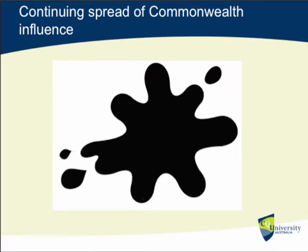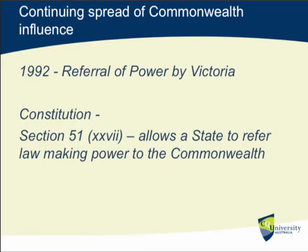Perhaps the best way to think about what happened from that point forward is to think of an ink blot that's continuing to spread. Effectively what we're looking at is a continuing spread of Commonwealth influence in employment law. It's taken roughly 20 years to get to the current position, but prior to that there'd been little change for around 70 years. It starts first and foremost in 1992 with a referral of lawmaking power in this area to the Commonwealth Government by the state of Victoria under Premier Kennett. Section 51(37) of the Constitution allows that to happen — it allows a state to refer that lawmaking power to the Commonwealth.